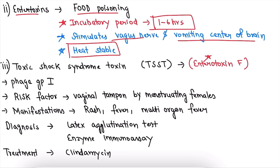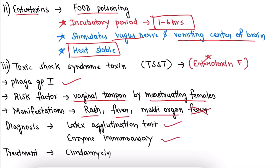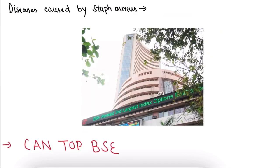Toxic shock syndrome toxin (TSST) causes toxic shock syndrome. Key points: it belongs to phage group 1; the risk factor is use of vaginal tampons by menstruating females; manifestations include rash, fever, and multi-organ failure. Diagnosis is by latex agglutination test or enzyme immunoassay, and the treatment is clindamycin.